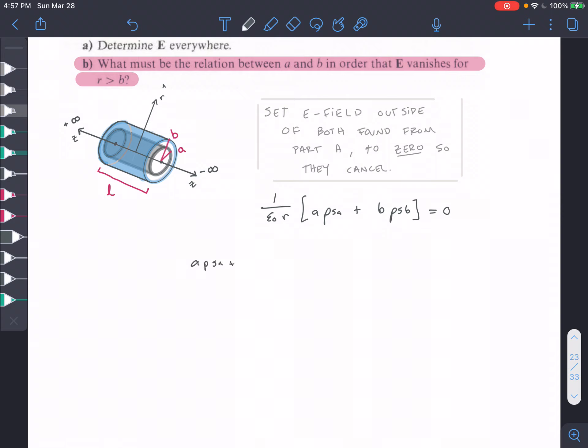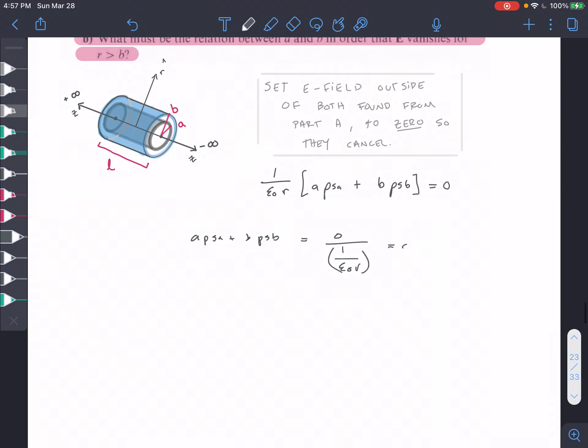So A ρ_SA plus B ρ_SB equals 0 divided by 1 over ε_0 R, which is going to be equal to 0.